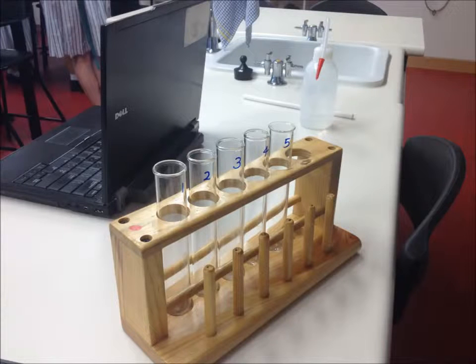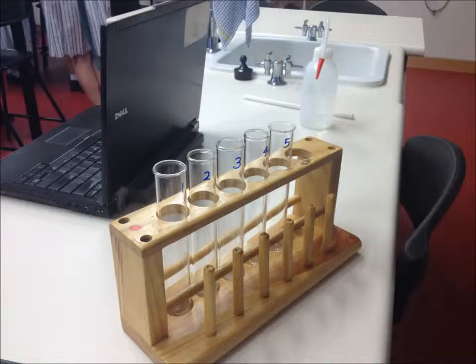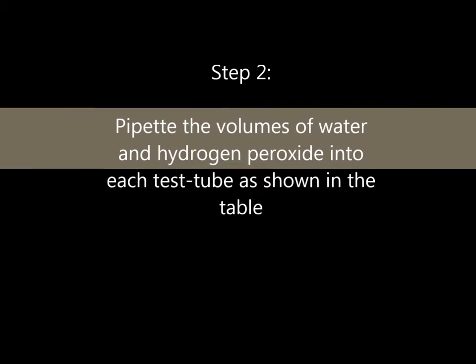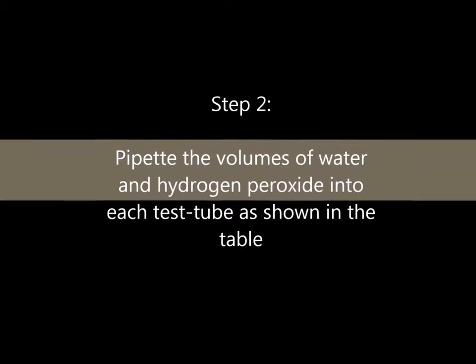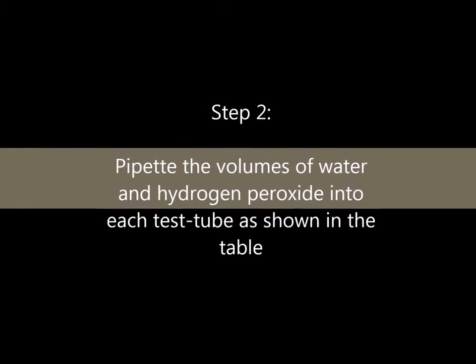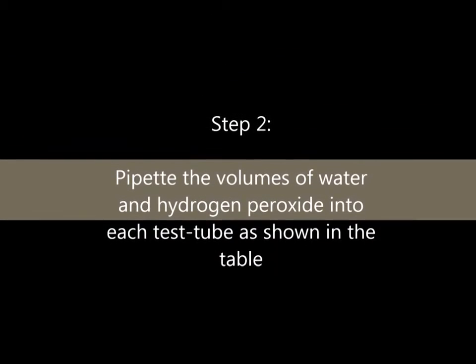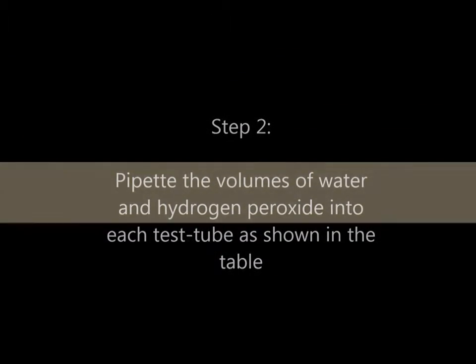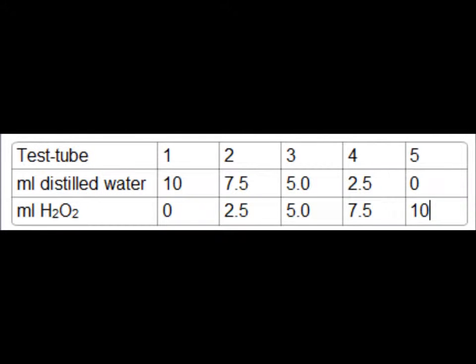Step 1: Set up five test tubes labeled 1 to 5. Step 2: Pipette the volumes of water and hydrogen peroxide into each test tube as shown in this table.